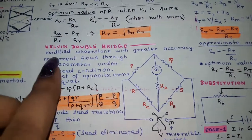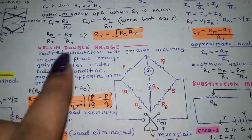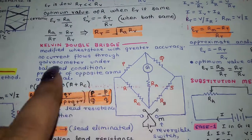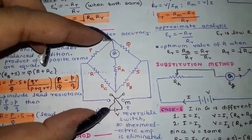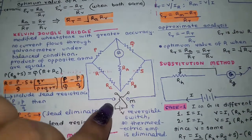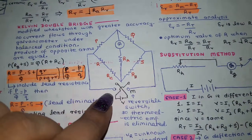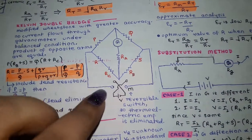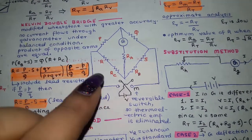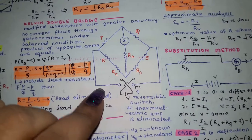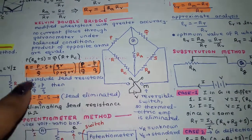The Kelvin double bridge is a modified Wheatstone bridge with greater accuracy. Under balance condition, no current flows through the galvanometer, and the product of opposite arms are equal. It is important to memorize the diagrams and derivations, as these are asked in IAS mains and UPSC Engineering Services mains exams.